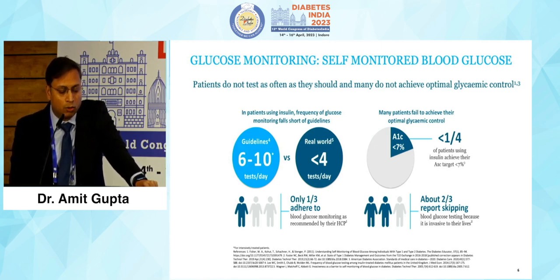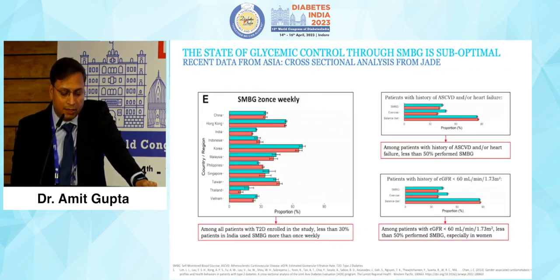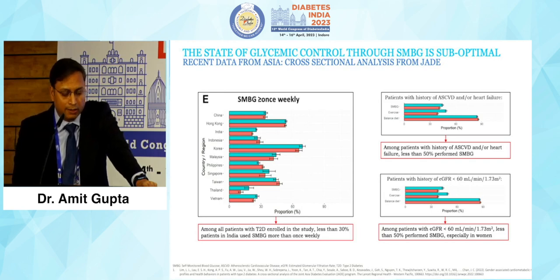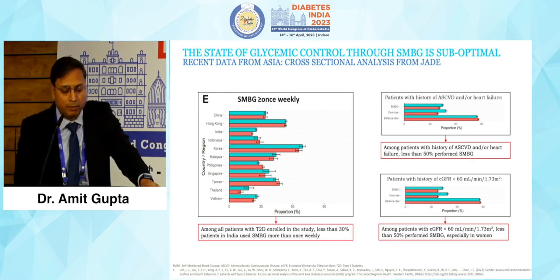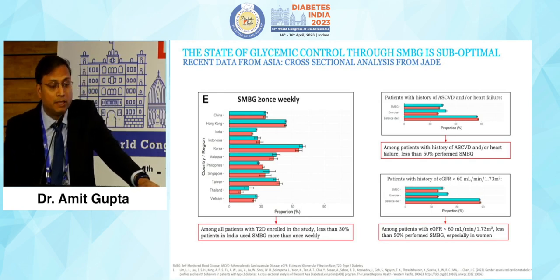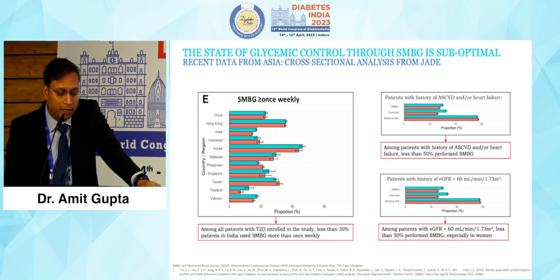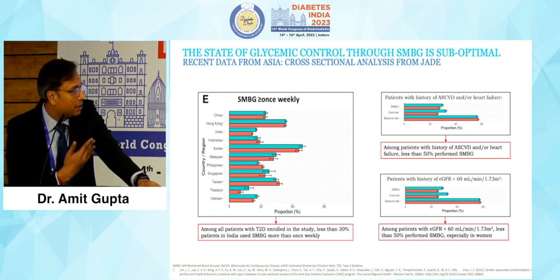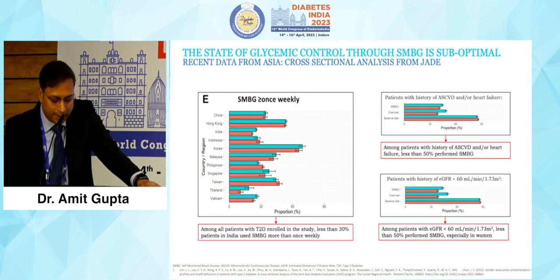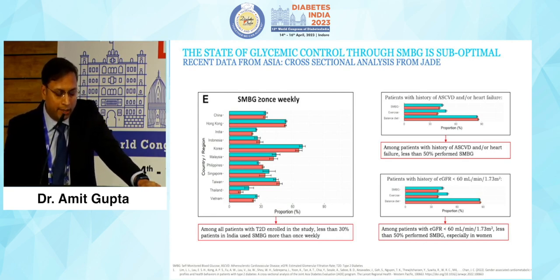SMBG has its own limitations, and the state of glycemic control through SMBG is suboptimal. Recent cross-sectional data from Asia shows how this is impacting glycemic control.